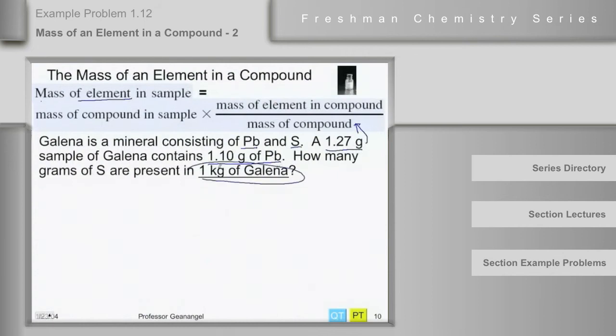So this is the mass of the compound in the sample. And what we need to know is the mass of sulfur in 1.27 grams of galena. We have, let me abbreviate galena as G, 1.27 grams of galena. And it is made up of 1.10 grams of lead, plus some number of grams of sulfur.